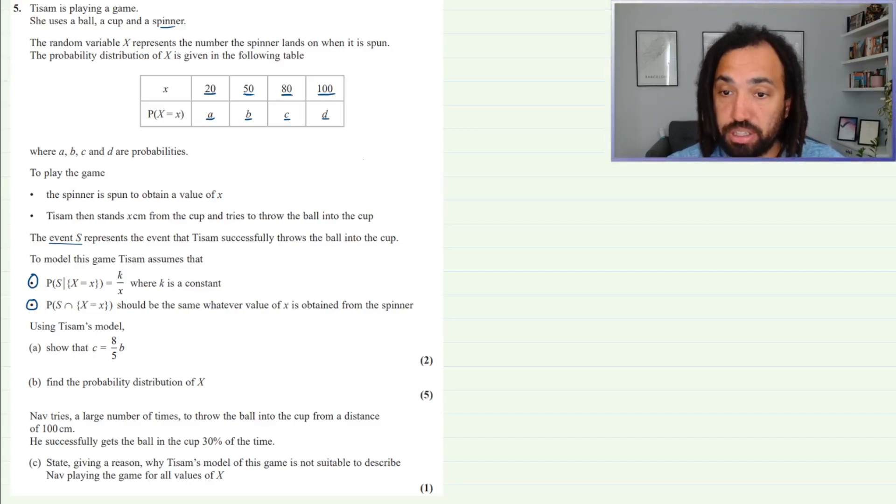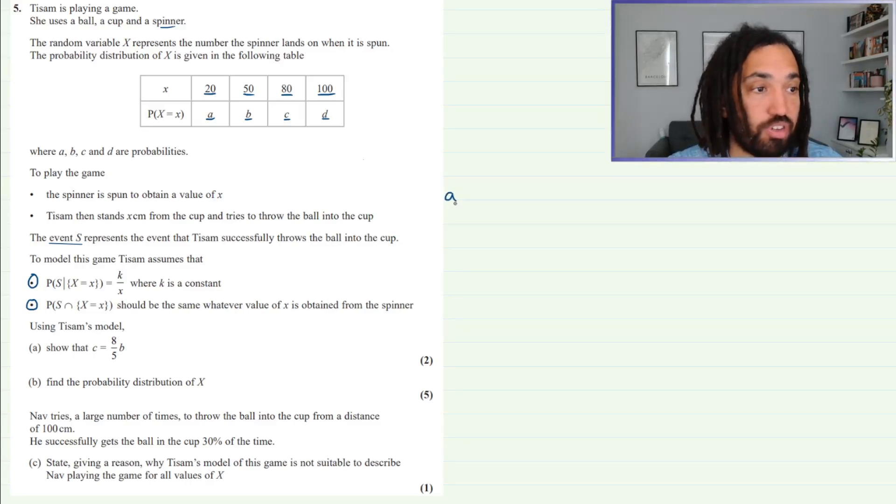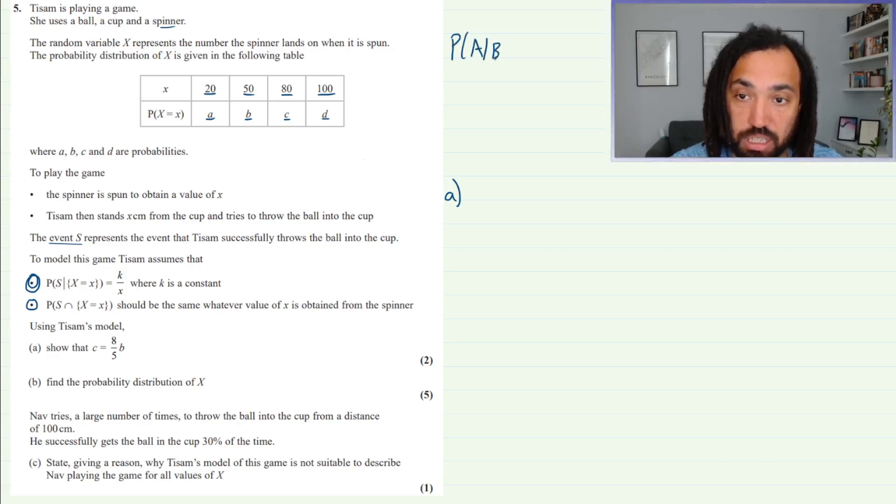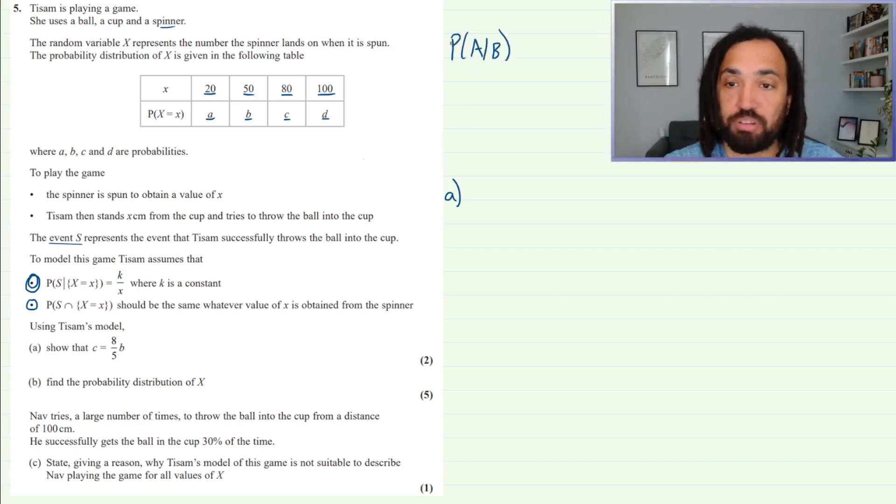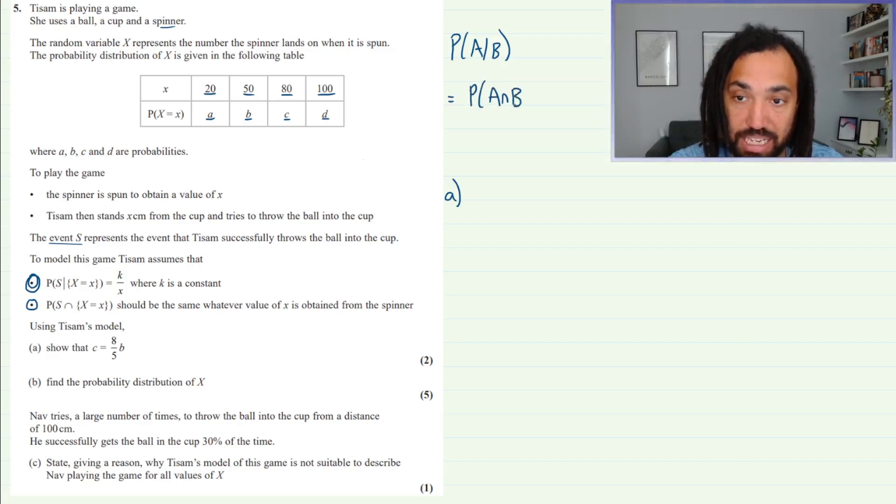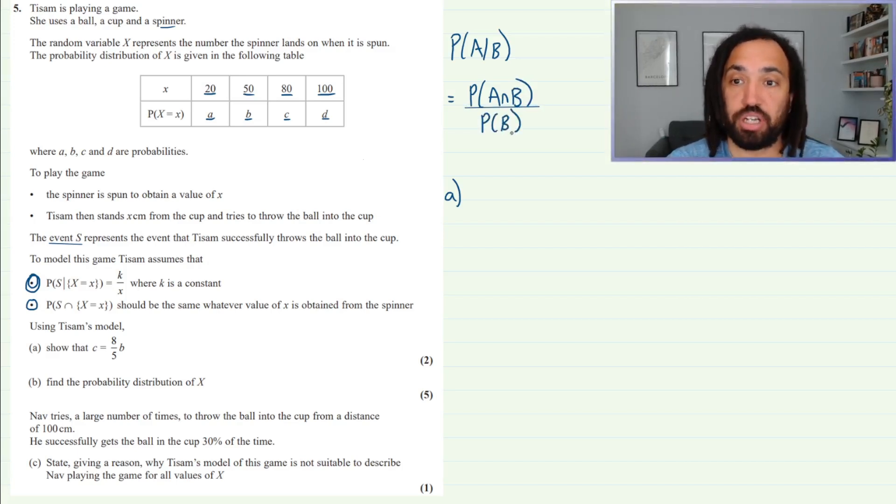Okay, so here's the solution. Let's start off first with understanding what this first bit of notation means. In order for us to understand that, we have to remind ourselves of the conditional probability formula. That states that if we have the probability of A given that B has occurred, that's equal to the probability of A intersection B over the probability of B. That's the formula for conditional probability and that's one you have to know.